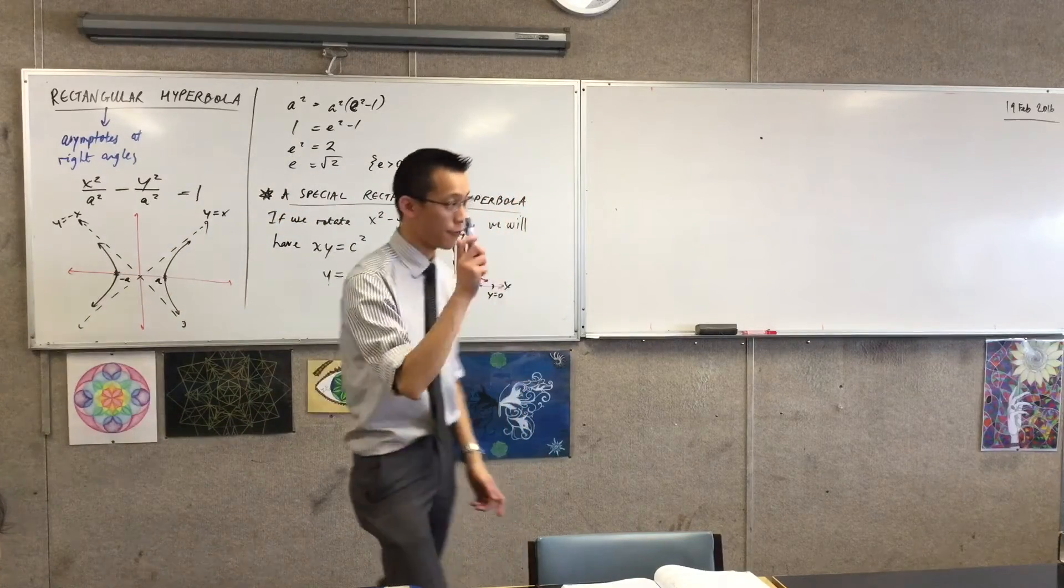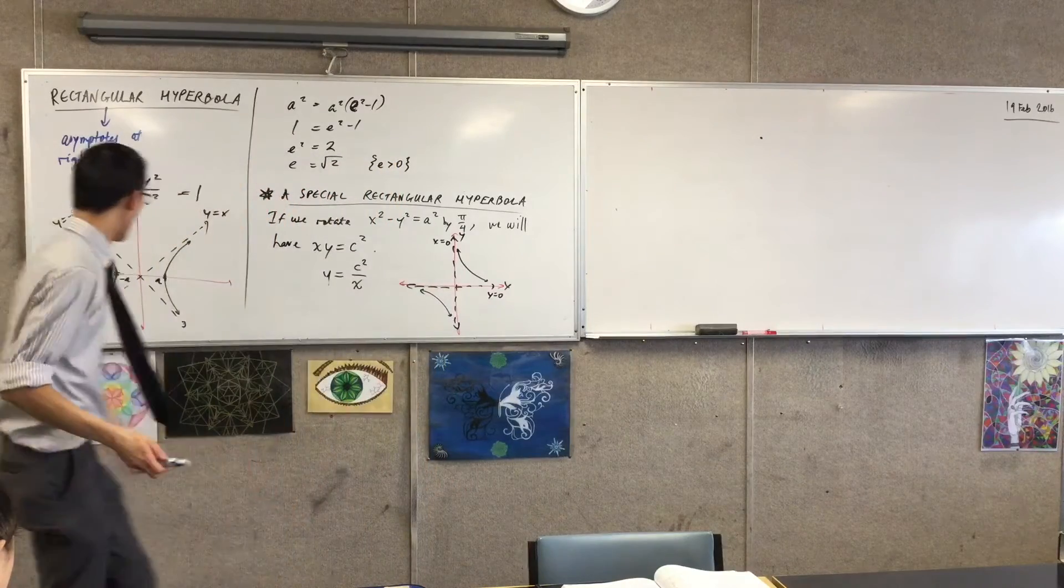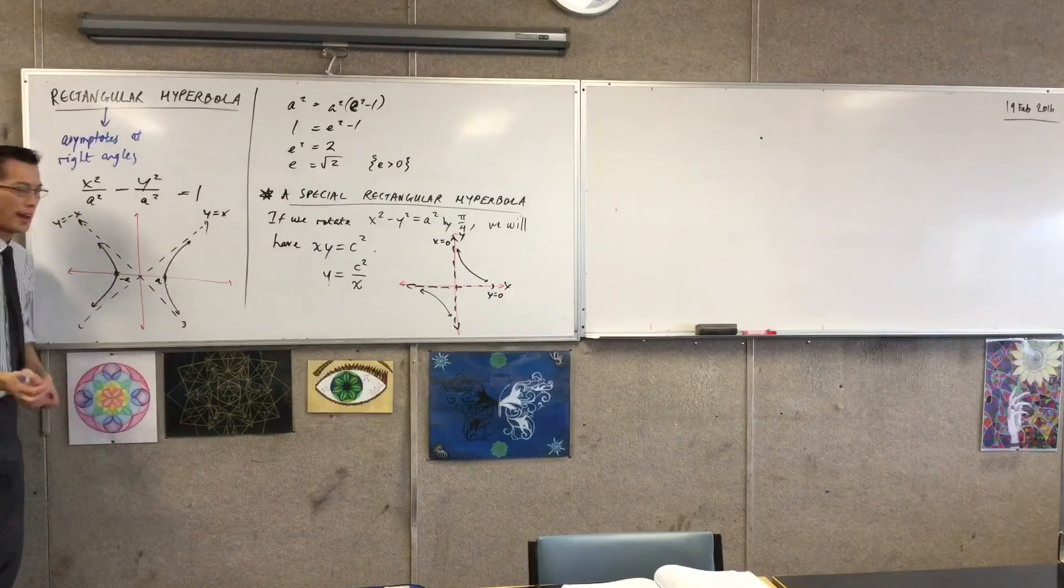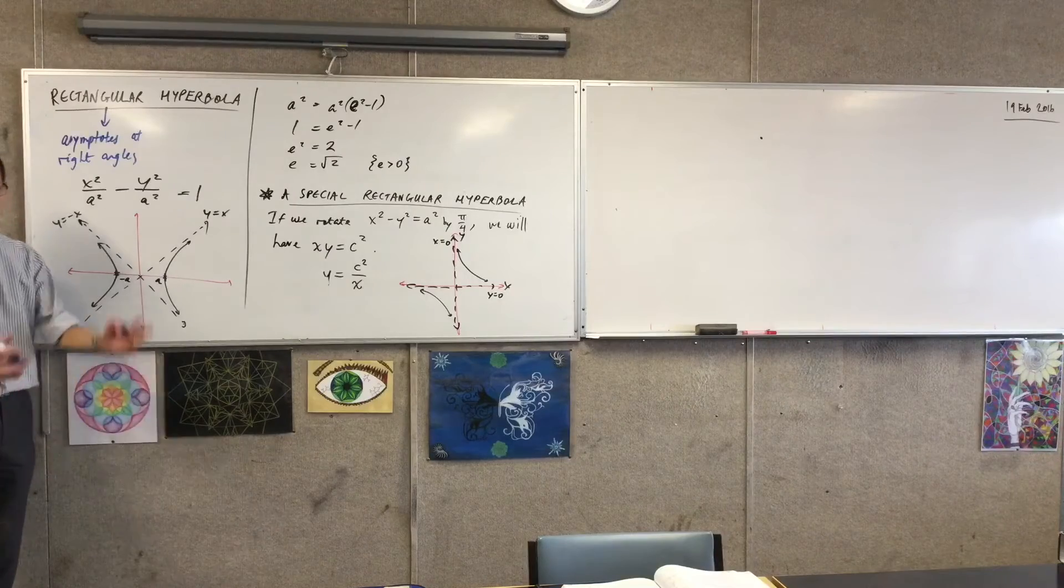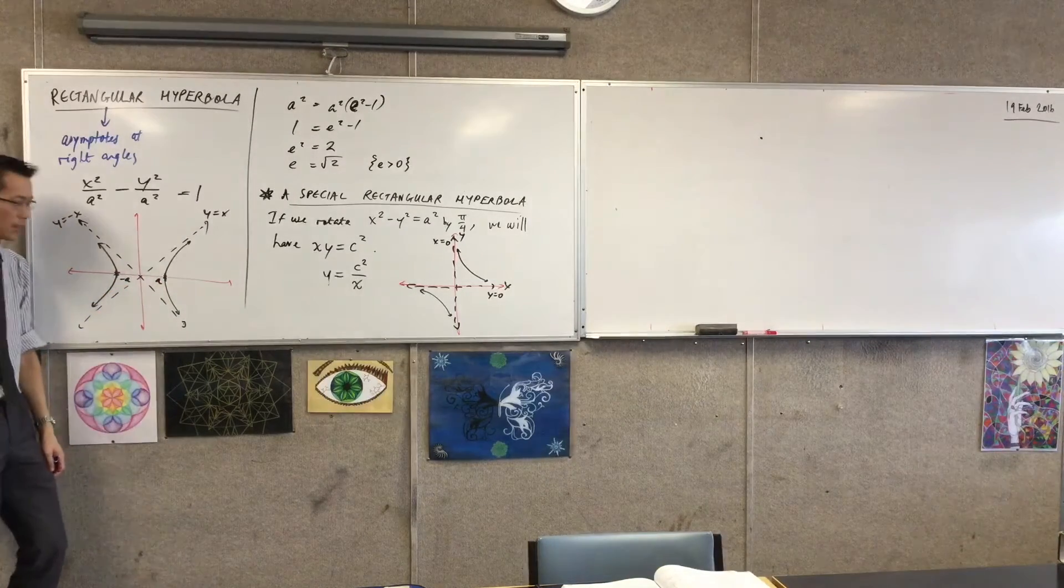So now is the right time to add the foci and directrices to our original rectangular hyperbola. Where are the foci and directrices? Let's do the foci first. Where are they relative to my hyperbola? A little bit, yeah, good.